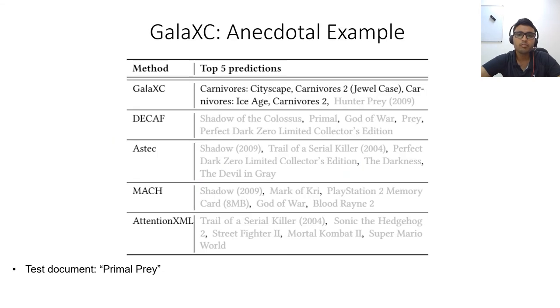Let us revisit the example of primal prey. When introduced in the graph, this test document gets connected to the training document carnivores, which in turn is connected to the nodes carnivores2, carnivores2 ice age, carnivores2 jewel case, and carnivores cityscape. Galaxy is thus able to make use of higher-order graph correlations and retrieve the correct predictions.